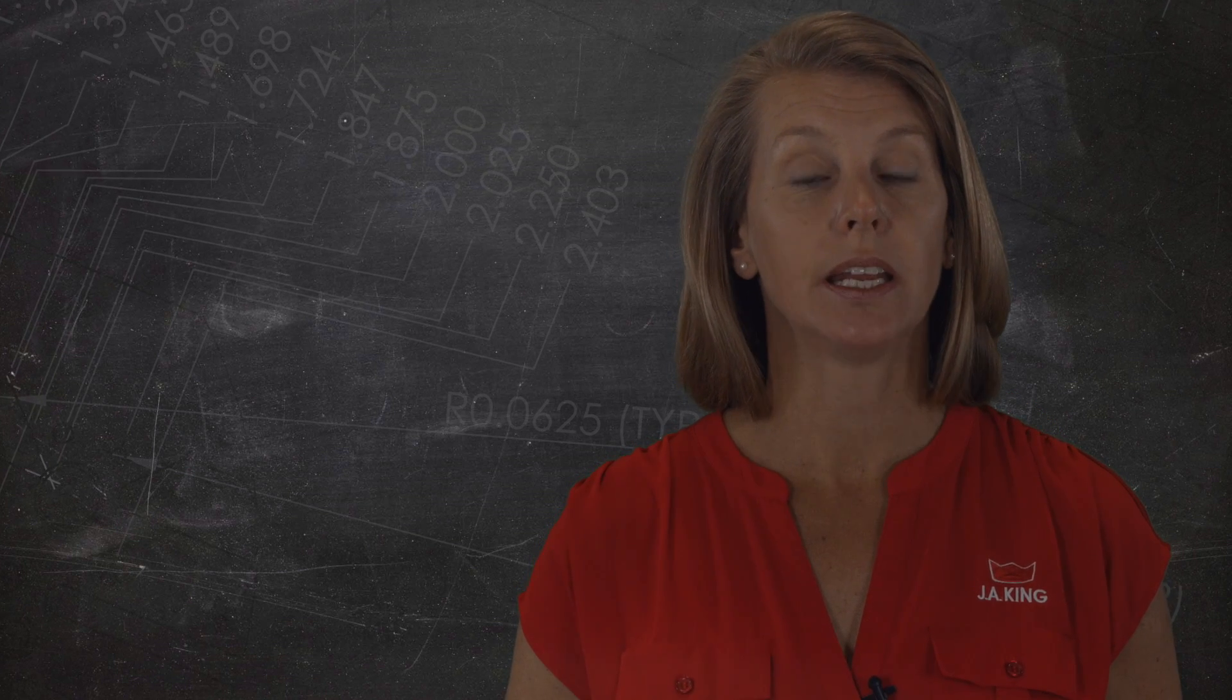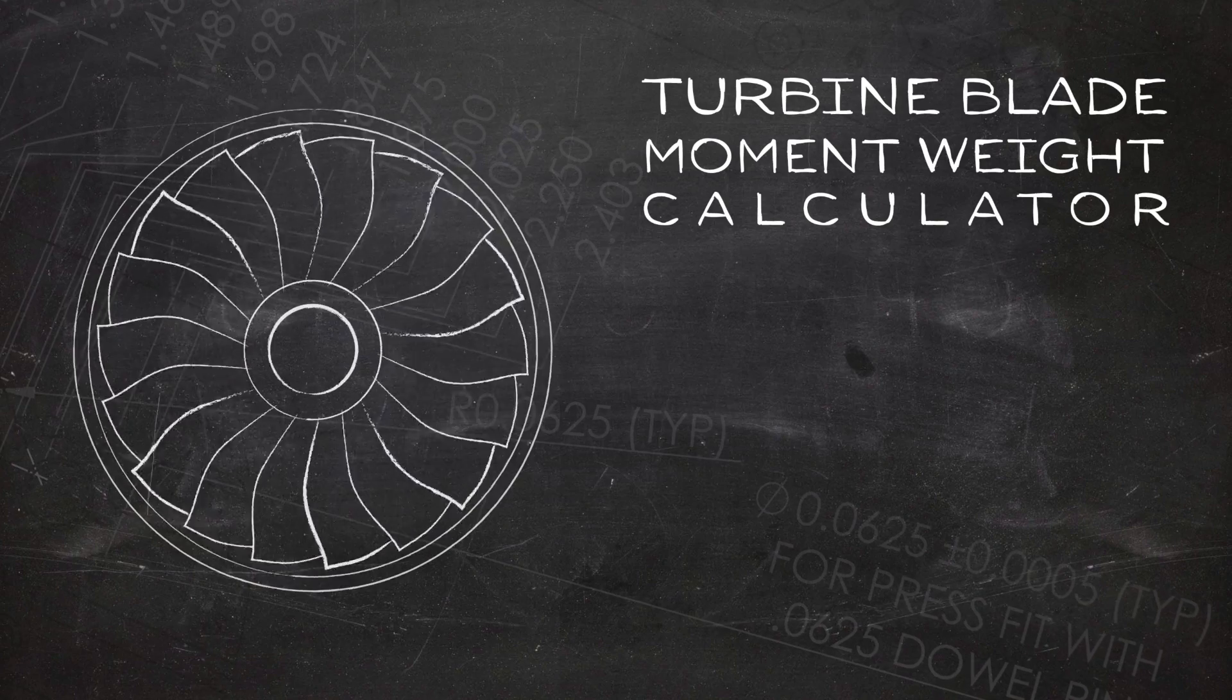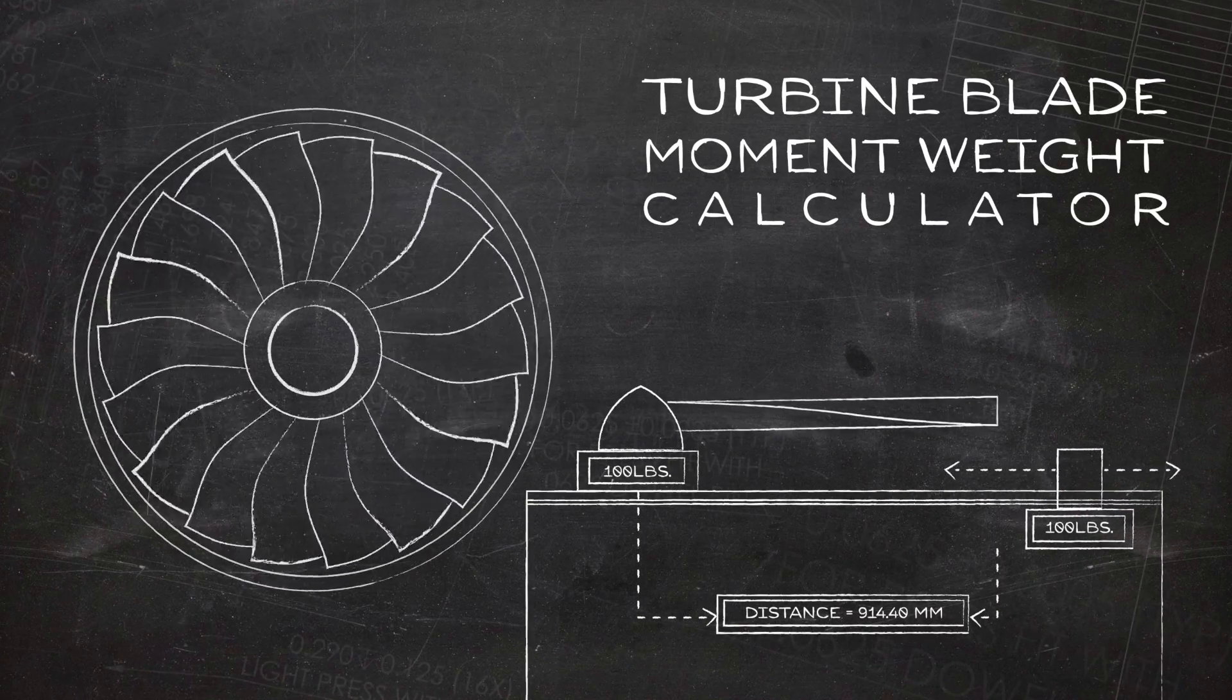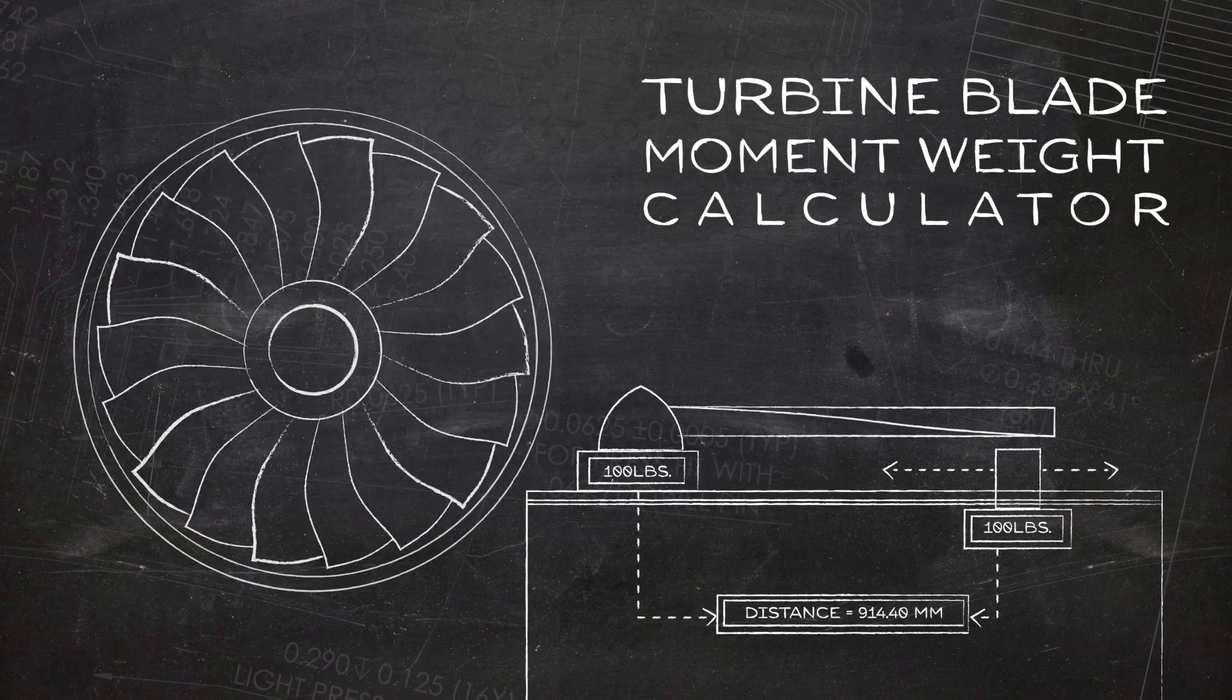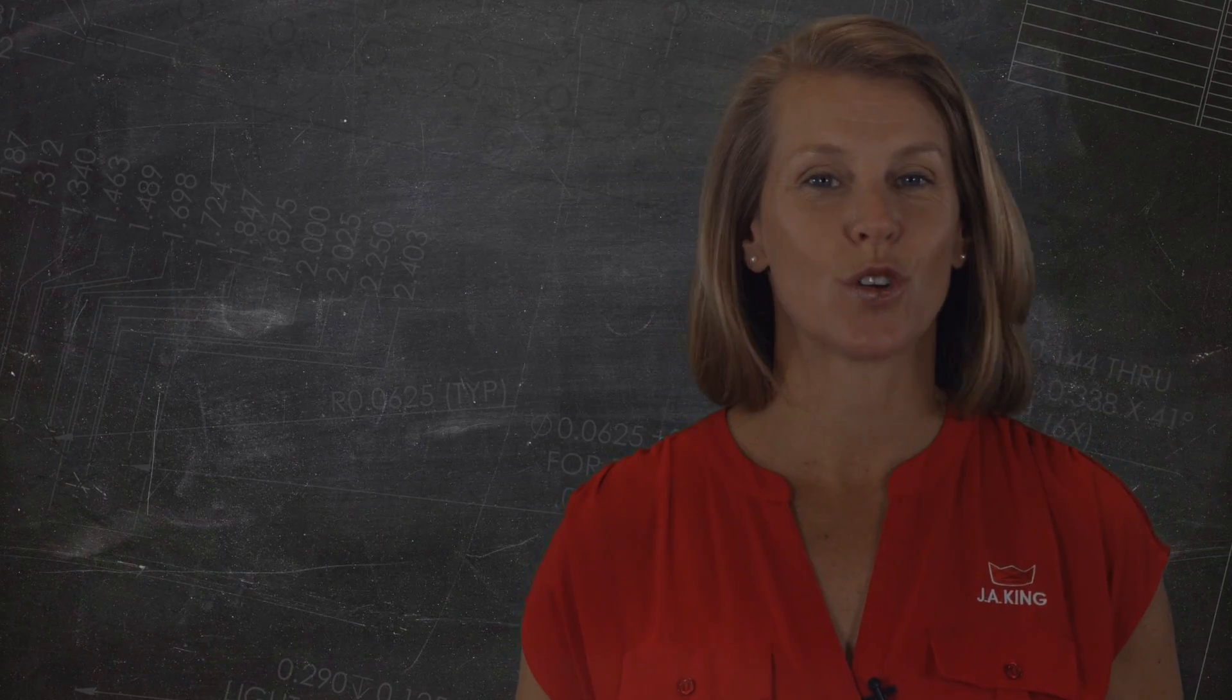Another global energy company needed a way to find the moment weight of turbine blades. J.A. King designed a system which captured both the weight of the blade and the distance to the center of gravity using a linear scale and movable load cell. The customer loved it so much that they ordered a second system.